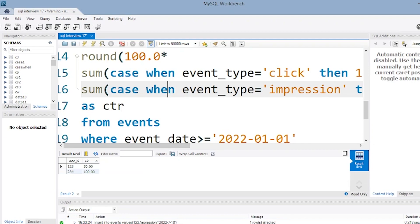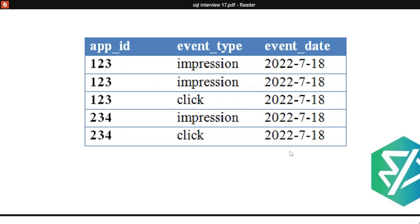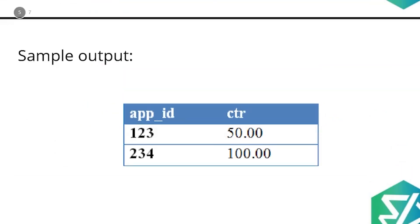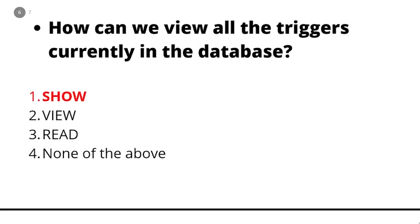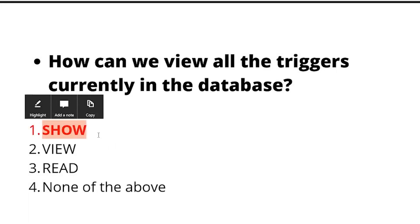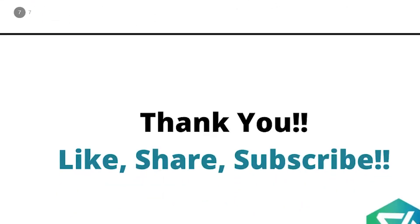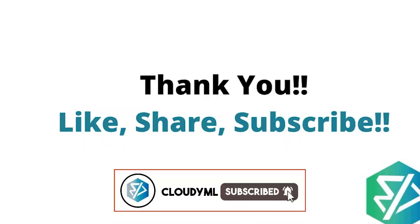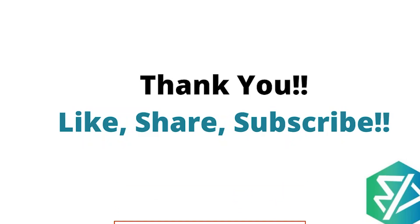I hope you've understood this. If you have any doubts, you can put them in the comment section. If you have another approach to solving this question, you can also share it there. This is the sample output we achieved. Coming back to the quiz question — how can we view all the triggers currently in the database? The answer is the SHOW command. SHOW TRIGGERS is used for viewing all the triggers. I hope you liked this video. Do share it with your friends and don't forget to subscribe. Thank you.